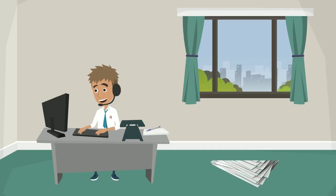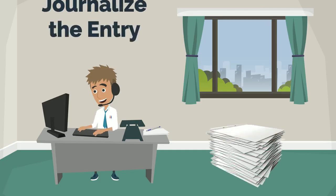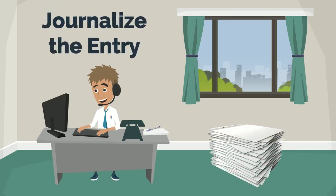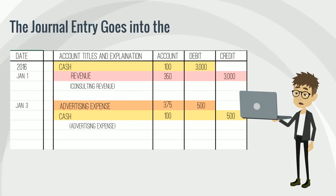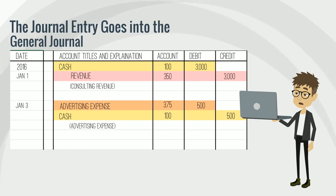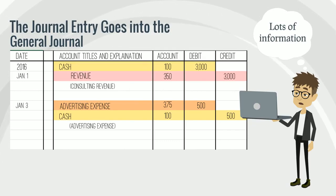After you have identified that an entry has to be made, you need to journalize it and get it into your accounting system. This is the journal entry. The journal entry is first and is very detailed — it has a date, amounts, at least two accounts that were affected, and the explanation.